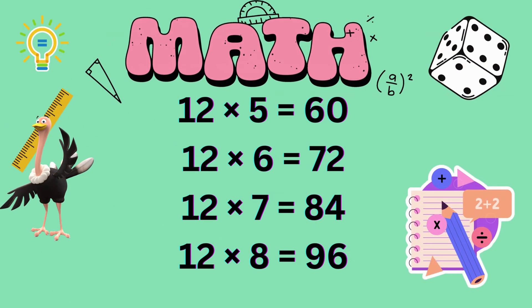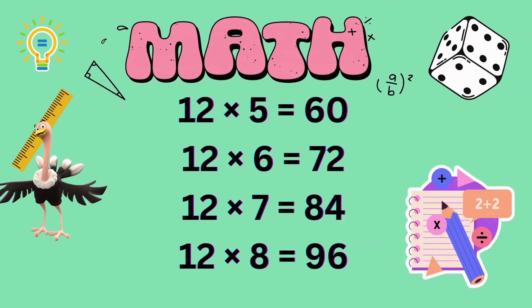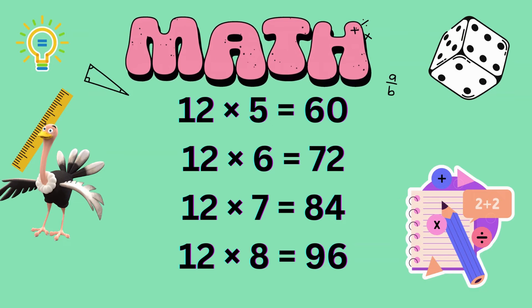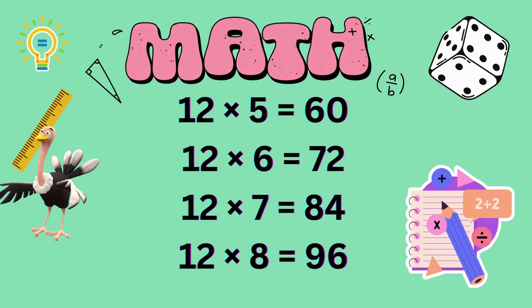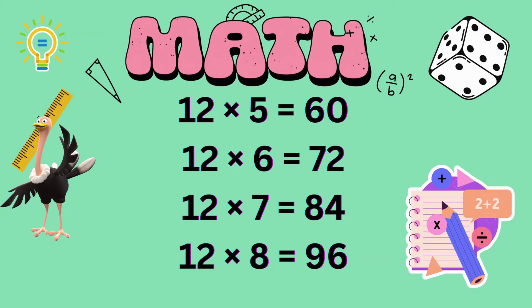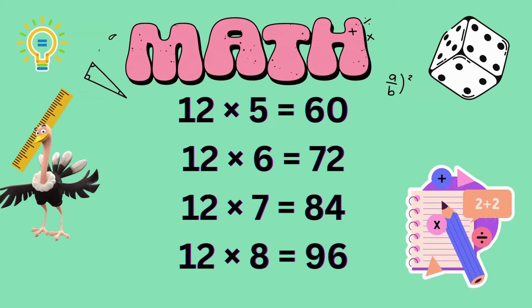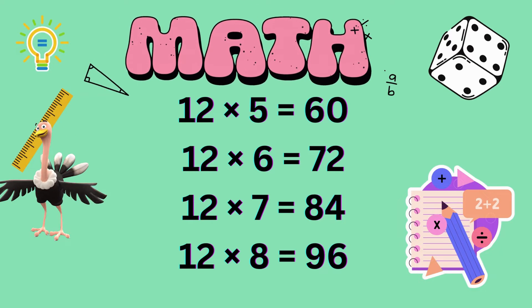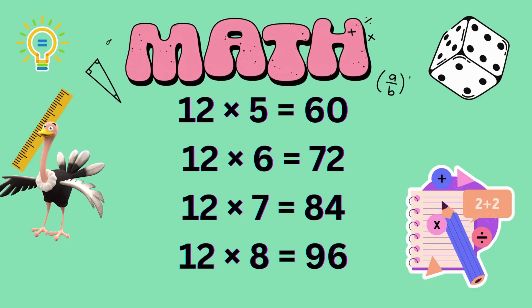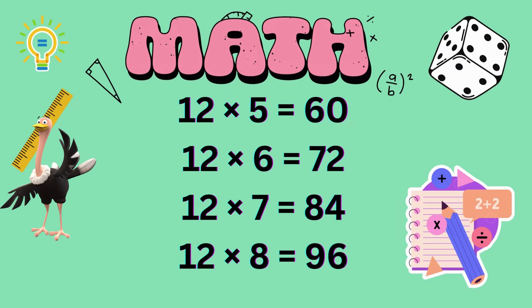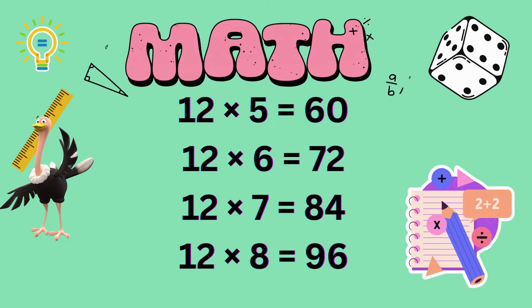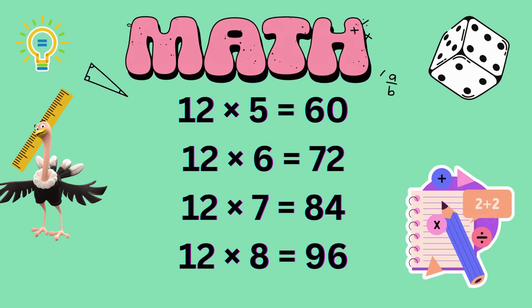What is 12 times 3? 36. What is 12 times 4? 48. What is 12 times 5? 60. What is 12 times 6? 72.